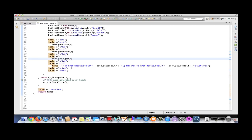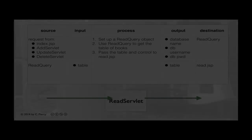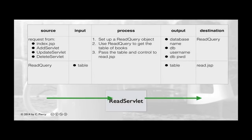This completes our read query. We won't have a chance to test it until we complete the other two components. Here we have an IPO, or input-process-output table, for one of the components in our read use case, namely the read servlet.